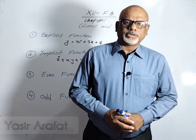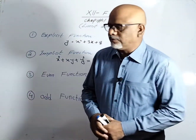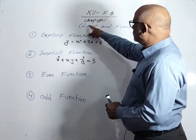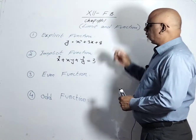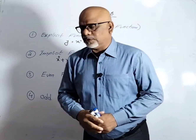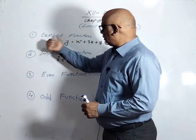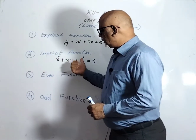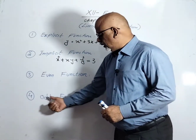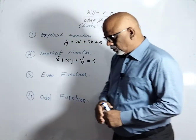Bismillahirrahmanirrahim, my dear friends, Assalamu Alaikum. You are watching Method Yasir Fah, and today we have to discuss second year federal board chapter 1: Limit and Function. We have to discuss four types of functions here, which are very important: explicit function, implicit function, even function, and odd function. We will explain these functions one by one.